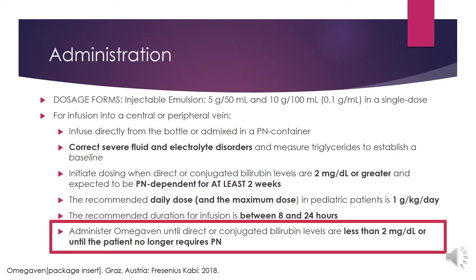A little about how and when to administer Omegaven: it comes in a dosage form of an injectable emulsion in 5 g/50 mL or 10 g/100 mL. The concentration in either is 0.1 g/mL in a single dose, for infusion into a central or peripheral vein. It may be infused directly from the bottle or admixed in a parenteral nutrition container. Prior to administration, correct severe fluid and electrolyte disorders and measure serum triglycerides to establish a baseline level. Initiate dosing as soon as direct or conjugated bilirubin levels are 2 mg/dL or greater.